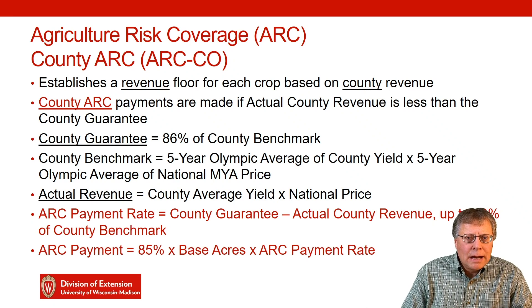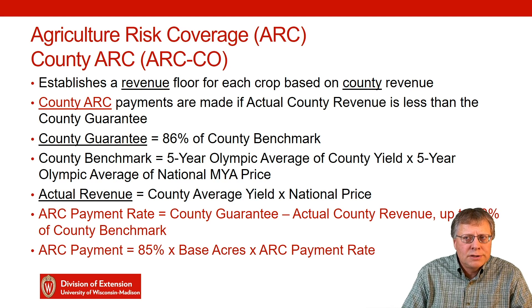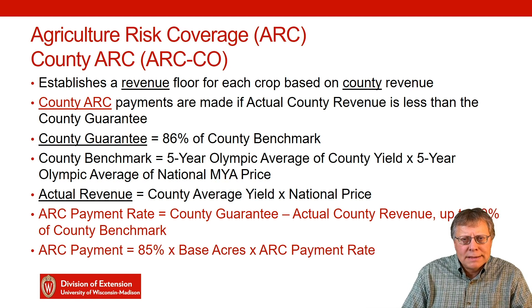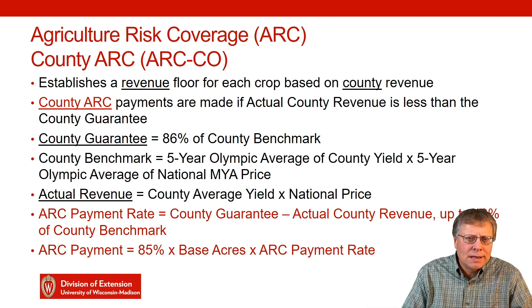Agricultural Risk Coverage, ARC, has a county-level program called ARC-CO, or County ARC. ARC-CO establishes a revenue floor for each program crop based on county revenue. County ARC payments are made if the actual county revenue falls below the county guarantee. In the end, it operates as a guarantee — if the price times the yield falls below that guarantee, you trigger ARC payments.